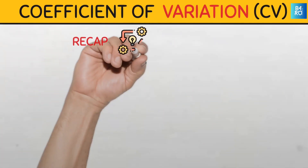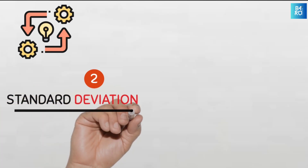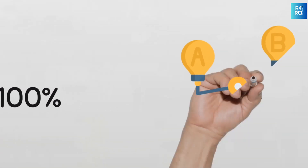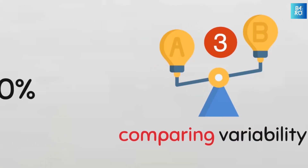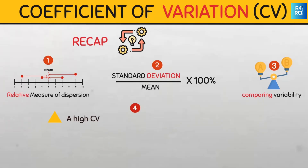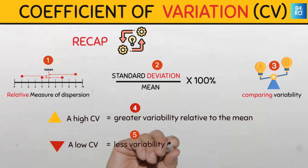To recap: the coefficient of variation is a relative measure of dispersion that explains the variability in a set of data around its mean. It is simply defined as the ratio of the standard deviation to the mean and it is often expressed as a percentage. It is useful in comparing the variability of different data sets because it expresses the standard deviation as a percentage of the mean, and so it provides a standardized way to compare the dispersion of different data sets, even if they have different units or vastly different means. A higher coefficient of variation indicates greater variability relative to the mean, while a lower coefficient of variation suggests less variability.